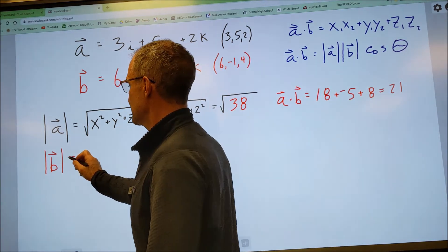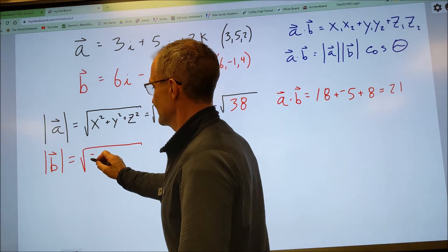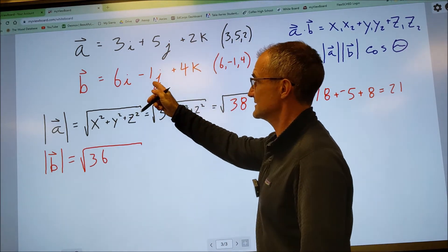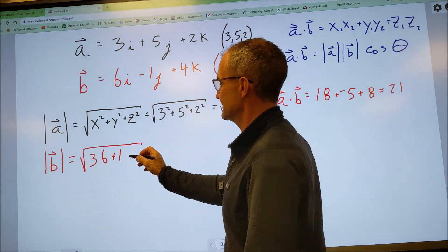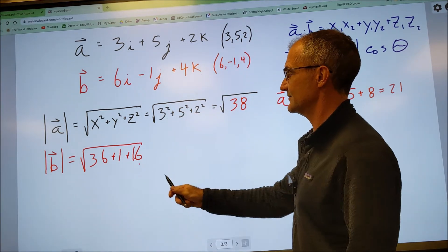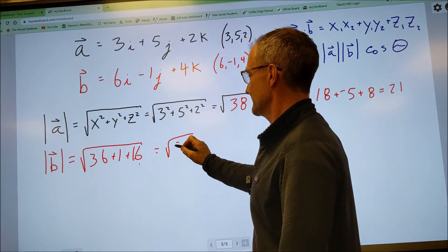The magnitude of B would be equal to the square root of 6 squared, 36, plus negative 1 squared, plus 4 squared. So then I have 52, 53, or the square root of 53.